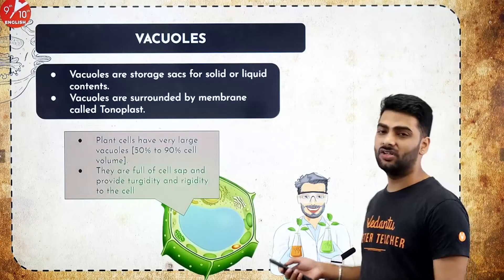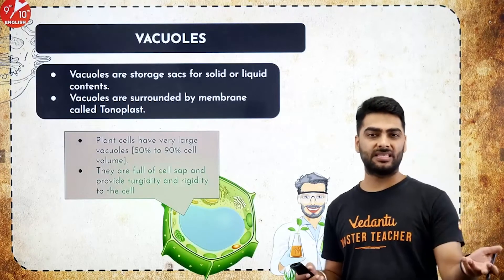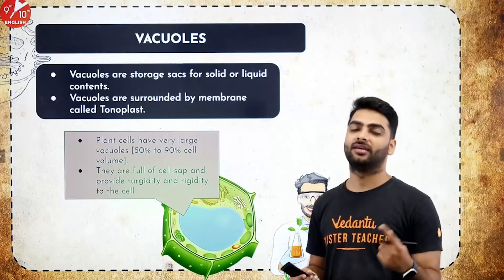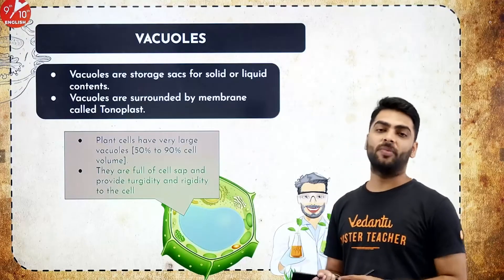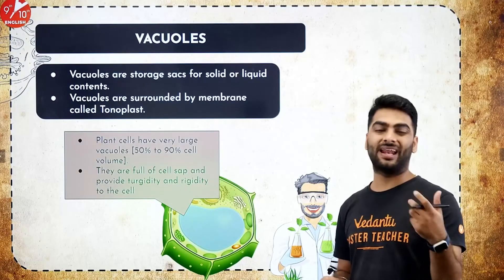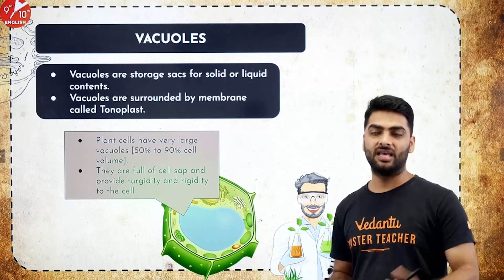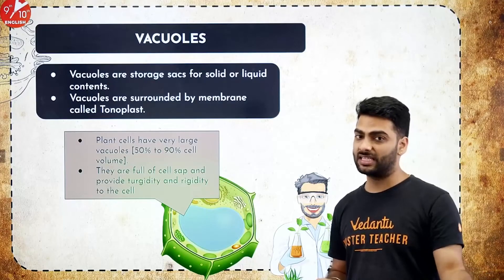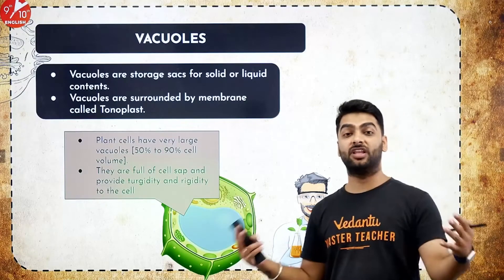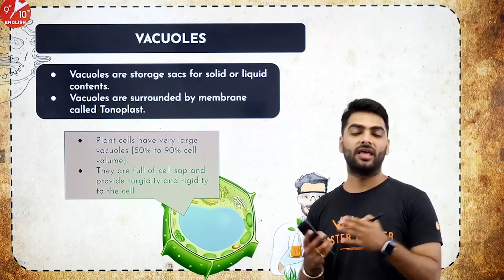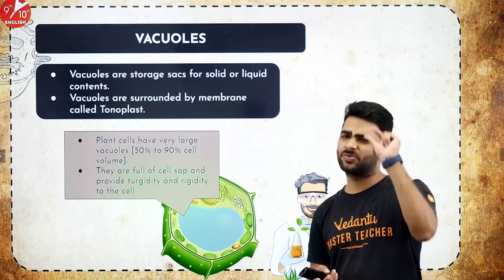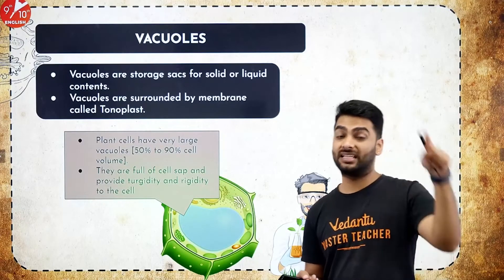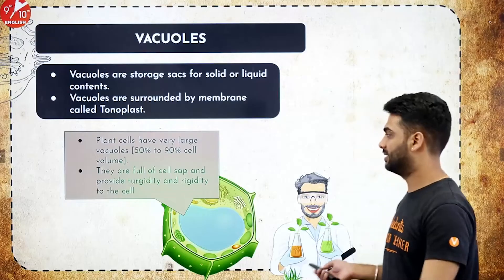Vacuoles are empty spaces — 'vacuum' and 'vacuole' are similar. They are meant for storage of food, water, and waste within the cell. Plant cells have a very large vacuole while animal cells have small vacuoles. Plant cell vacuoles have a covering layer called the tonoplast.